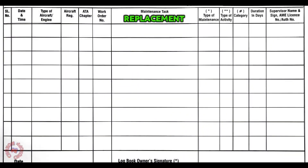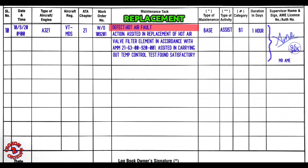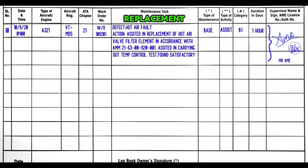Another example for PDR entry and replacement: defect reported was hot air fault. It was done in base so there is no tech log number — work order number is written and type of maintenance is base. If you are assisting in any type of replacement, write in the action: assisted in replacement of hot air valve filter element in accordance with AMM 21. Then: assisted in carrying out temperature control test — found satisfactory. Type of maintenance: base, assist, B1, one hour duration.